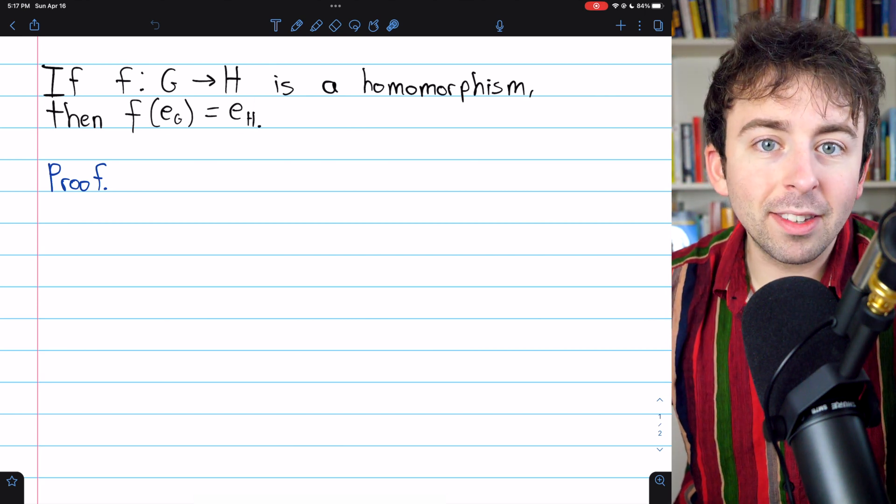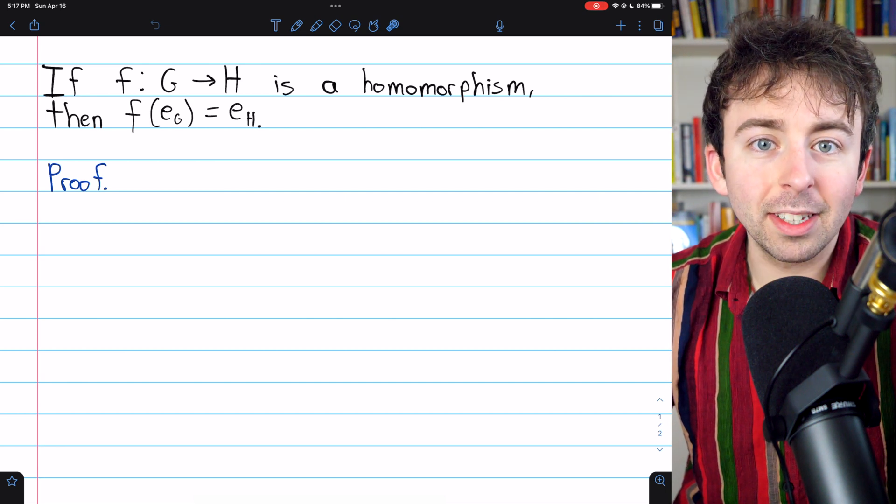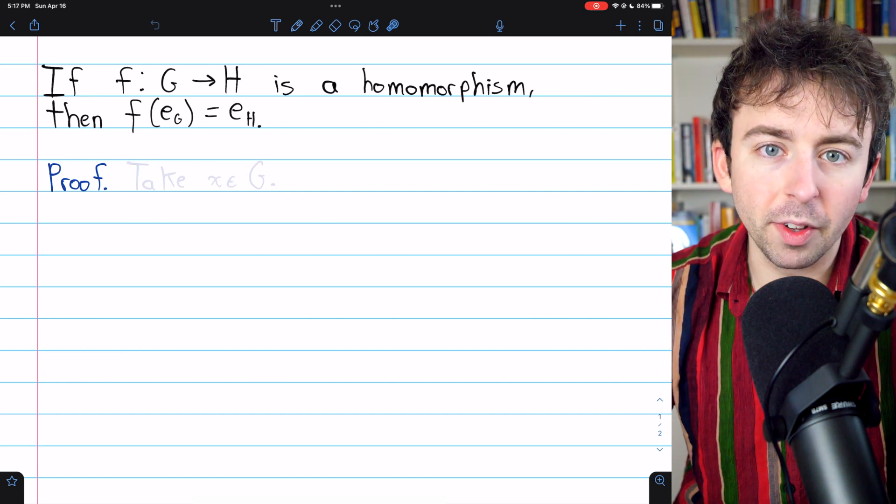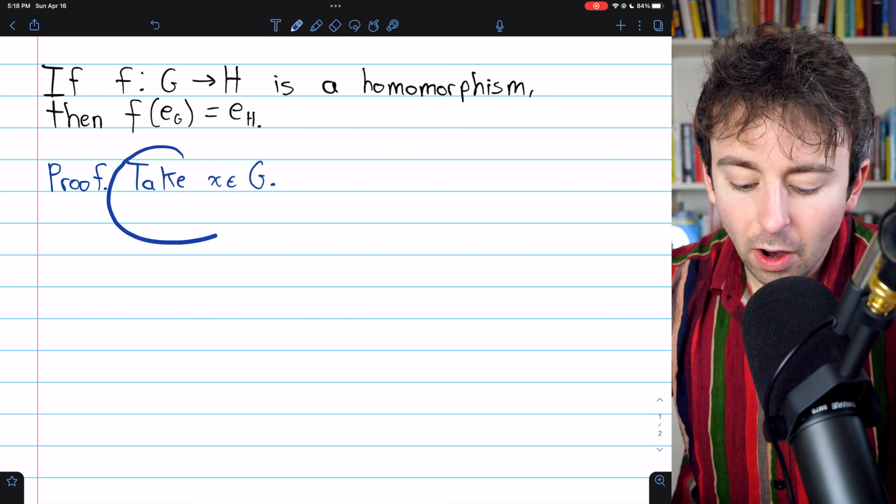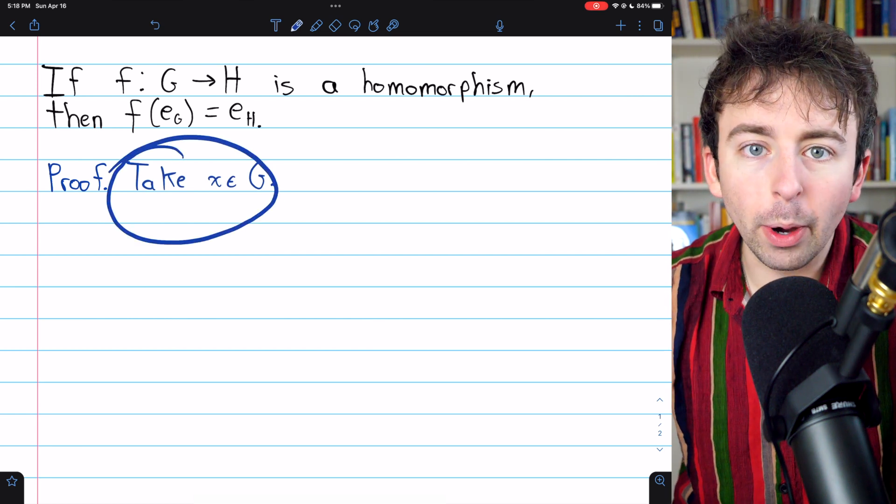We're going to prove this basic homomorphism property. Link in the description to my lesson on homomorphisms if you need a review. To begin the proof, let's take an arbitrary element x from our group G.